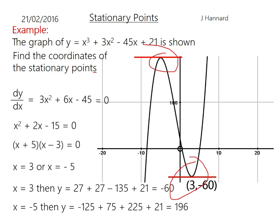So you'll shove them both back through the original equation to get two y coordinates of minus 60 and 196. So your stationary points are 3 minus 60 and minus 5, 196.